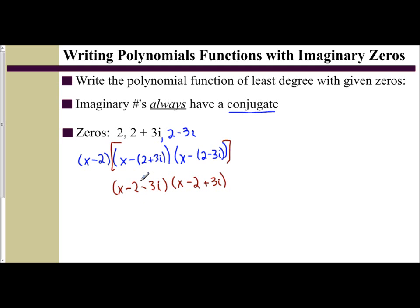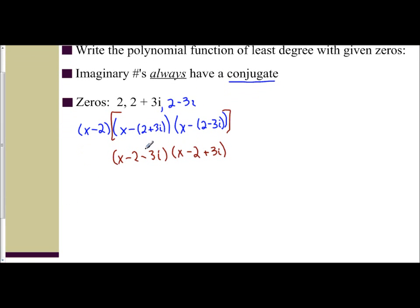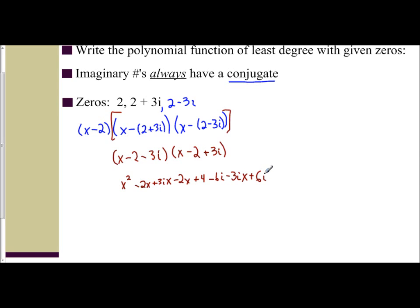Distributing: x minus the quantity 2 plus 3i becomes x minus 2 minus 3i, and x minus the quantity 2 minus 3i becomes x minus 2 plus 3i. Distributing x: x squared minus 2x plus 3ix. Distributing negative 2: negative 2x plus 4 minus 6i. Distributing the negative 3i: negative 3ix, positive 6i, and negative 9i squared.